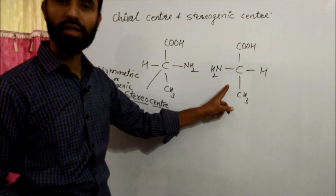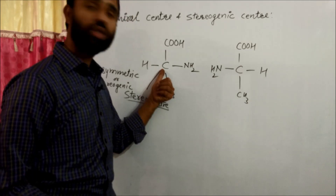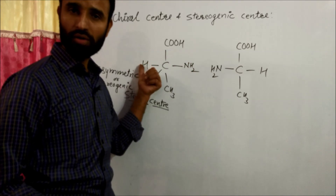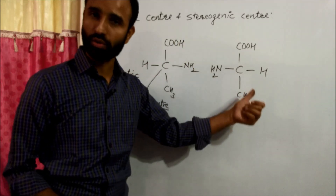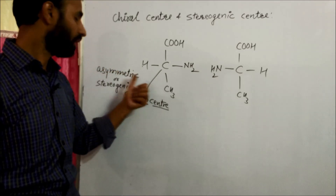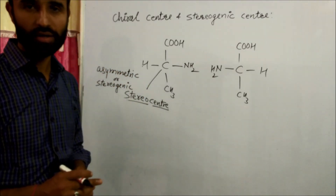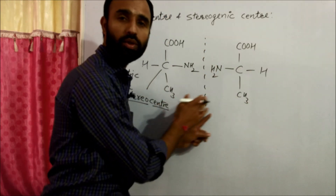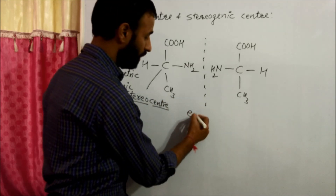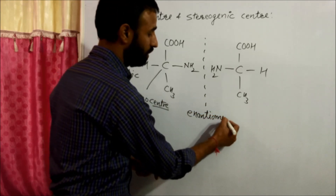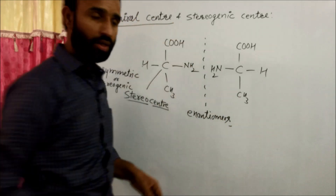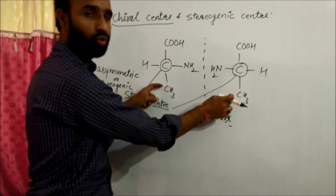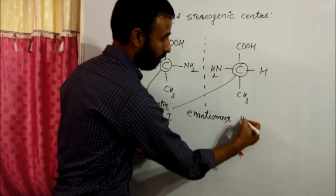Now, on this carbon, if we interchange the groups, we get a new stereoisomer. Such a carbon where, if we interchange the groups and we get a new stereoisomer, is called a stereocenter, asymmetric carbon, or stereogenic center. And if these two isomers are non-superimposable mirror images — meaning they are enantiomers — then it is called a chiral center.